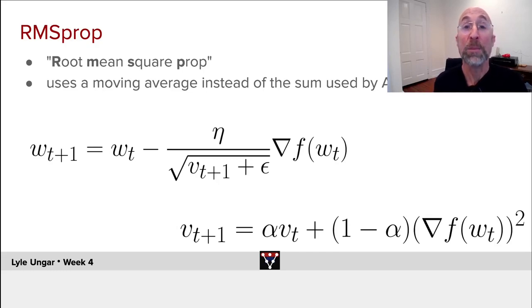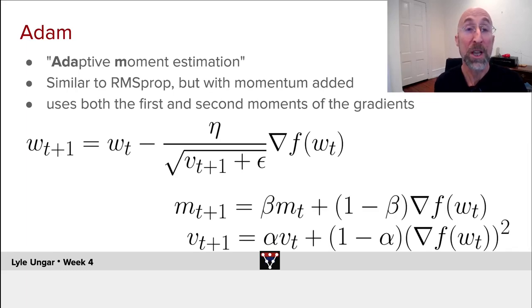Even better than RMSprop is Adam, which is I think the most widely used method right now, and it has momentum as well as the average weight. So it keeps m, which is the weighted moving average of the gradient...